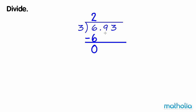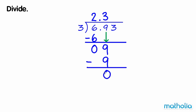Bring down the tenths. 9 tenths divide 3 equals 3 tenths. 3 times 3 tenths equals 9 tenths. 9 tenths subtract 9 tenths equals 0.